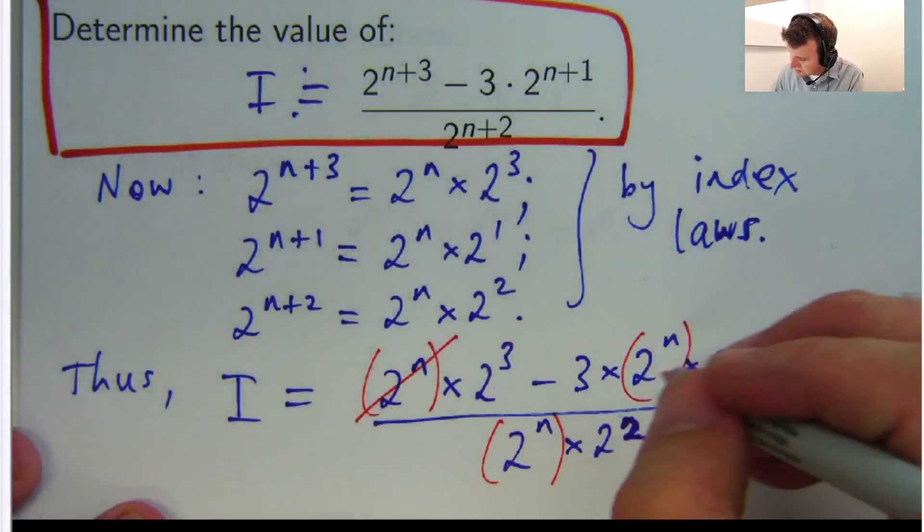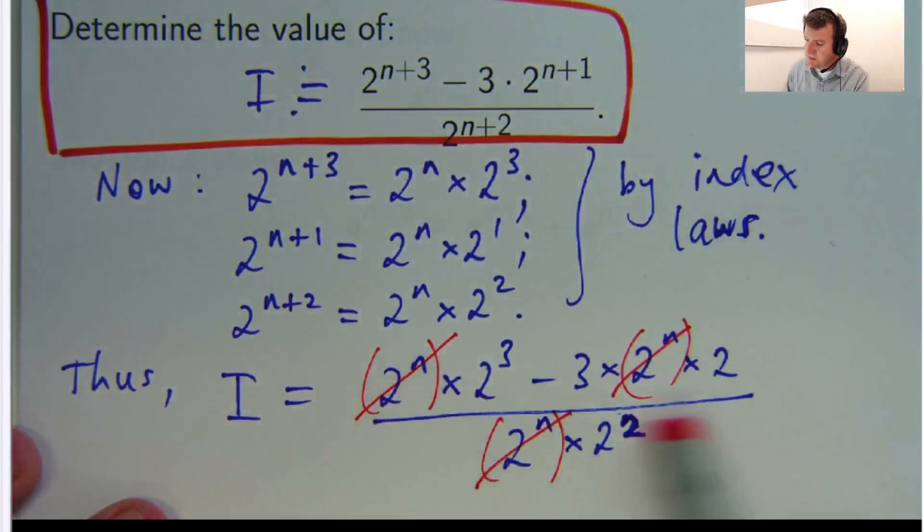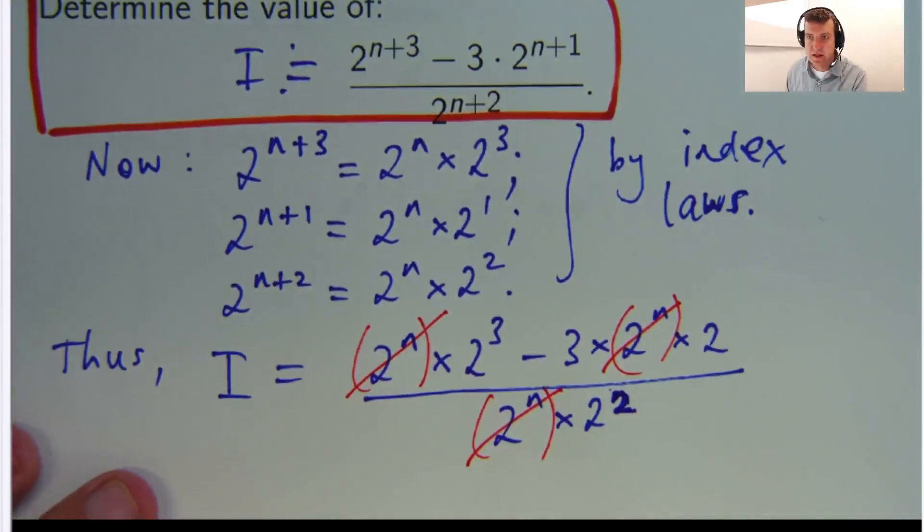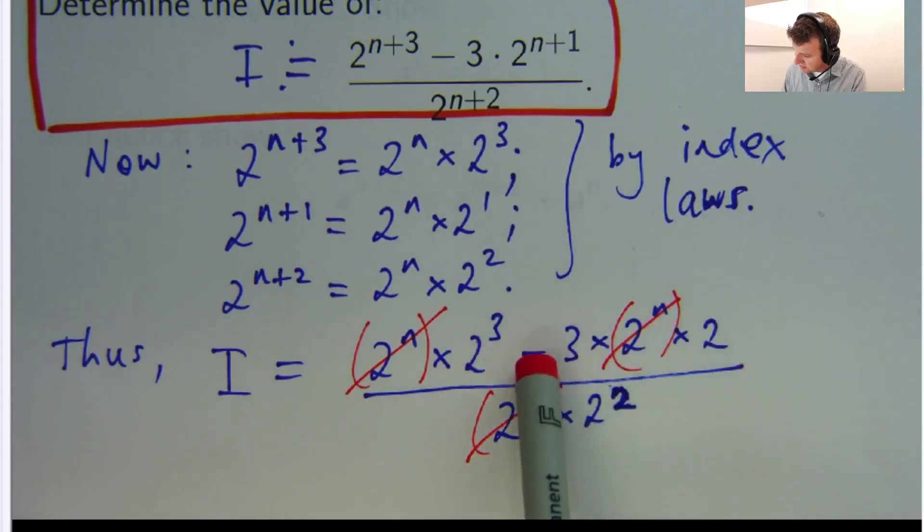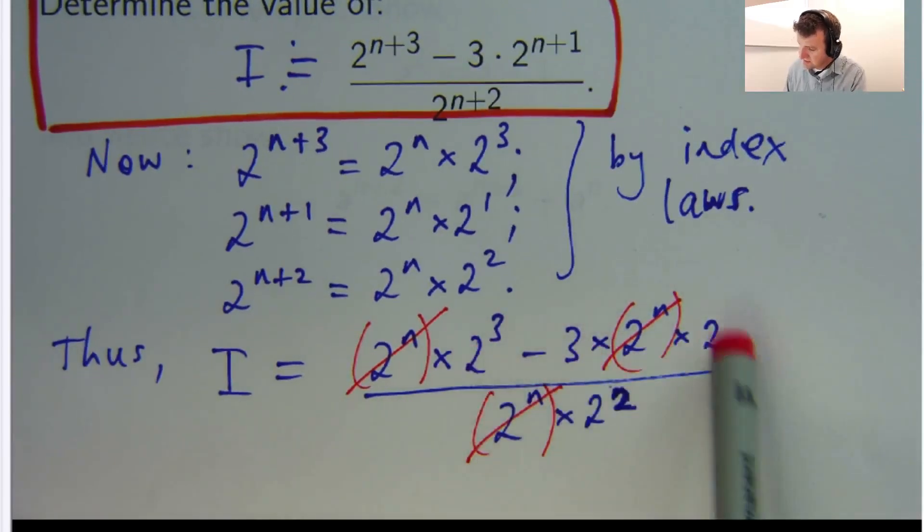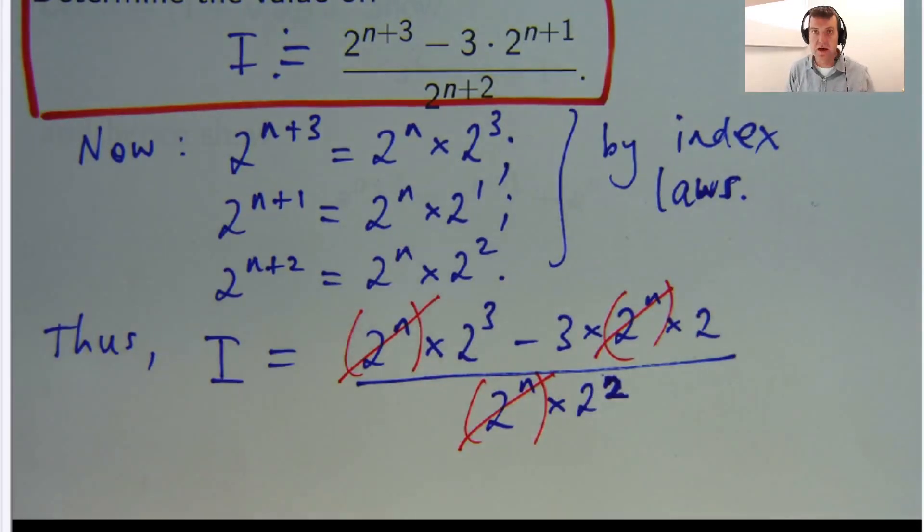So I can cancel, cancel, cancel. And what am I left with? Well, that's going to give me 8, and then I've got minus 3 times 2. So 8 minus 6, all over 4.